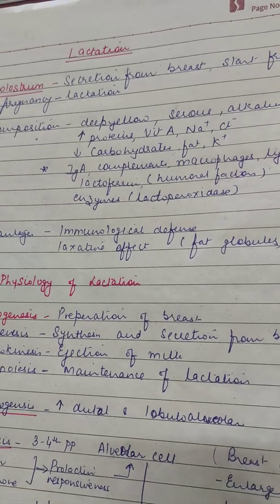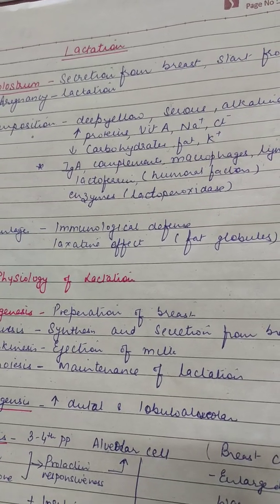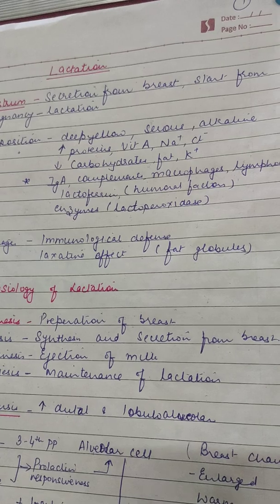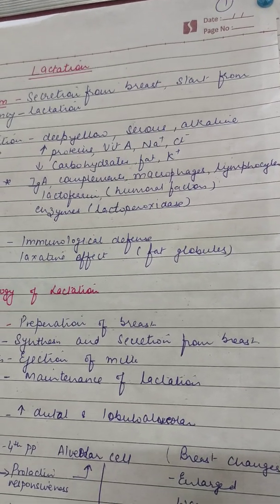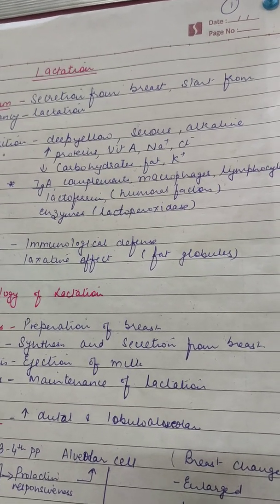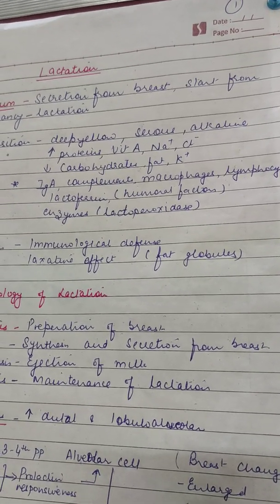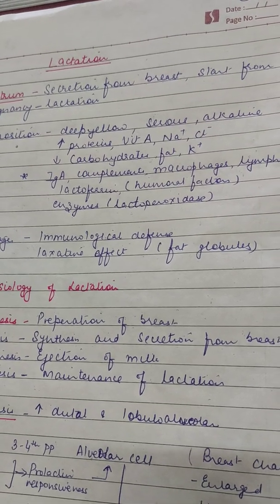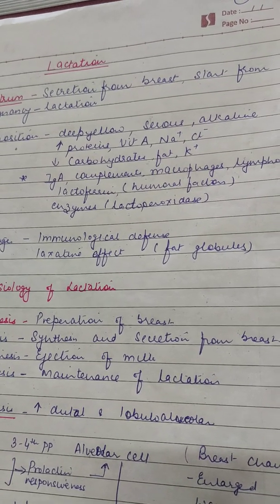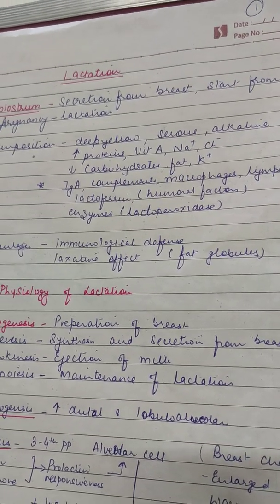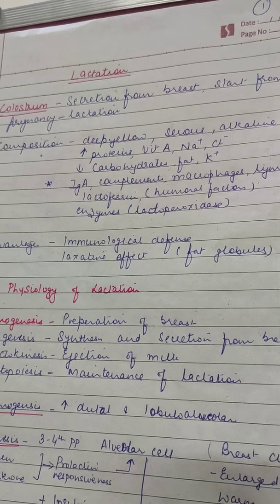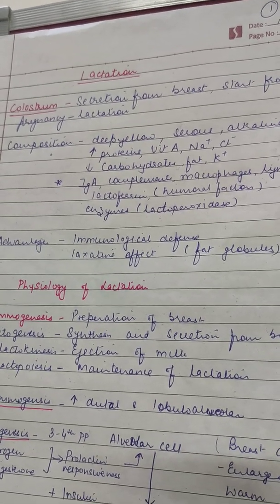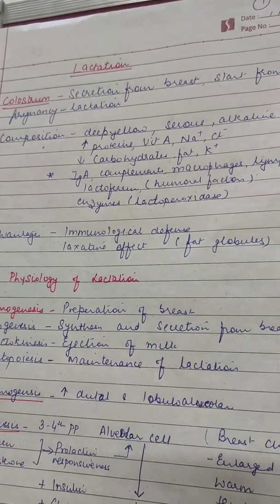Colostrum is also rich in IgA complement, macrophages, lymphocytes and humoral factors like lactoferrin and enzymes called as lactoperoxidase. So this is the composition of colostrum and how it is different from normal breast milk.